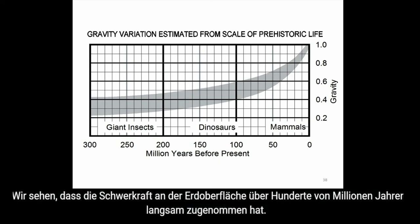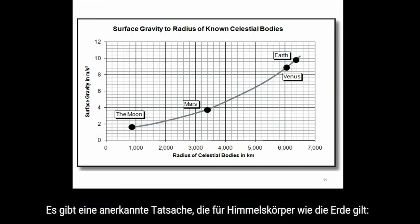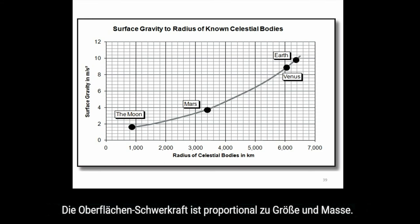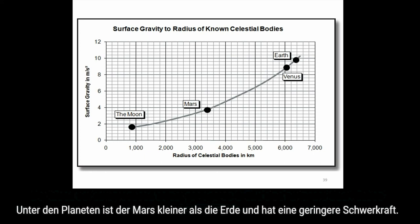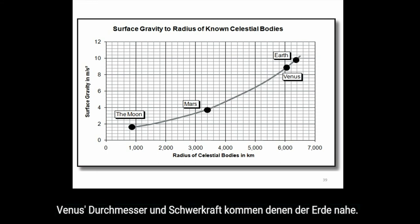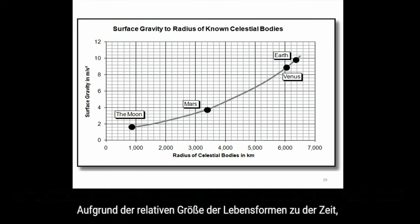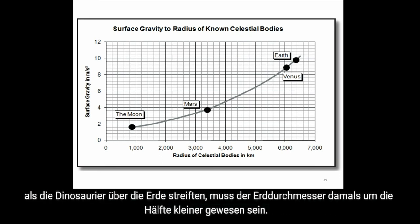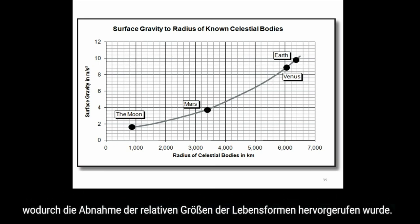The low gravitational field on the ancient Earth can be estimated from the relative scale of ancient life. This graph indicates the probable change in gravity on a reduced-gravity Earth based on ancient life — we can see that surface gravity has been slowly increasing over hundreds of millions of years. There is one obvious fact about celestial bodies: surface gravity is proportional to size and mass. The Moon has a low surface gravity to match its small size; Mars is smaller than the Earth and has lower gravity; Venus approaches both the Earth's diameter and gravity. Based on the relative scale of ancient life, when the dinosaurs roamed the Earth, it was about one-half the diameter it is now, and since that time the Earth has increased its diameter, mass, and surface gravity, reducing the relative size of life.